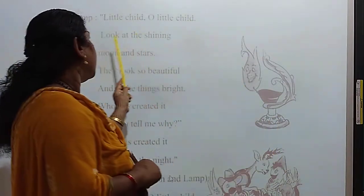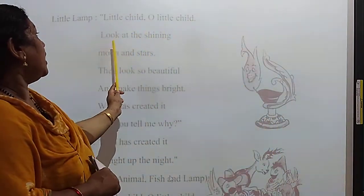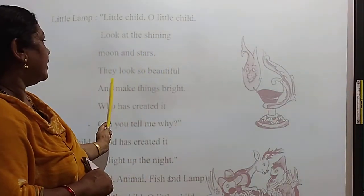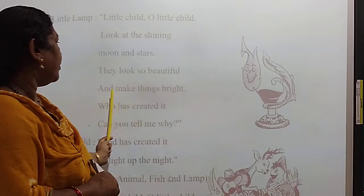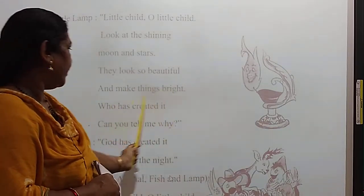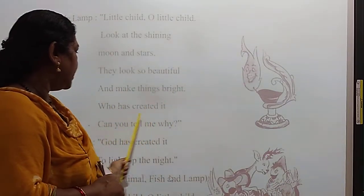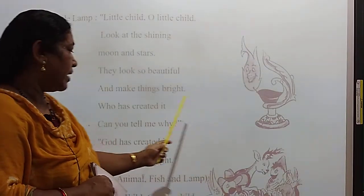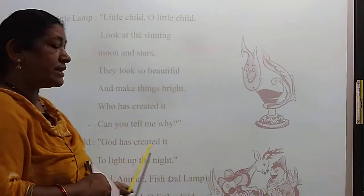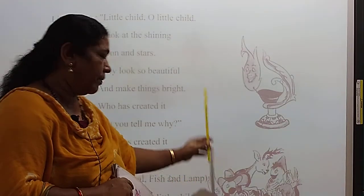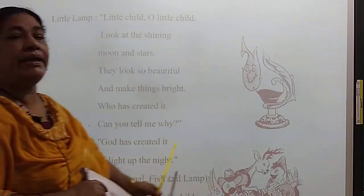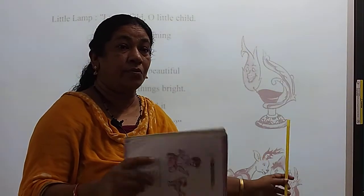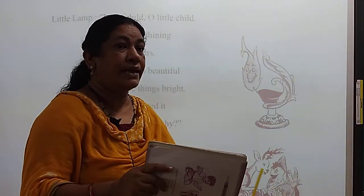Little child, little child, look at the shining moon and stars. They look so beautiful and make things bright. Who has created it? Can you tell me why? God has created it to light of the night — to give us light in the darkness.